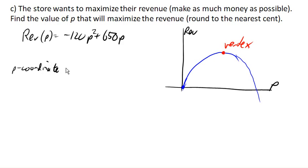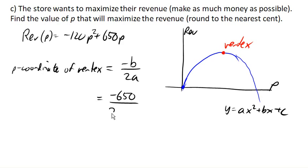This is just like an x-coordinate, except instead of x, we're using P. The p-coordinate of the vertex would be negative b over 2a, where we're talking about the equation ax squared plus bx plus c. The b is the coefficient on the linear term, and a is the coefficient on the quadratic term. So in this case, negative b is gonna be negative 650 over 2 times a, and a is negative 120. So we've got 650 over 240, comes out to about $2.71 as the price that will give us the maximum revenue.